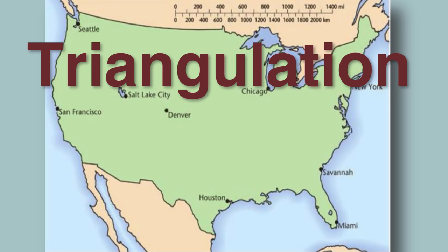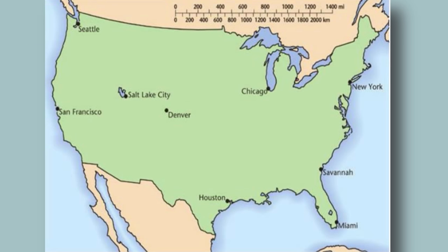Triangulation of an epicenter happens this way. On this map, we have three different seismic stations: Salt Lake City, Houston, and Savannah. Each one detects the same earthquake at different times, because it takes longer for the seismic waves to reach the seismographs further away.